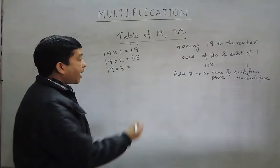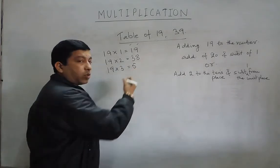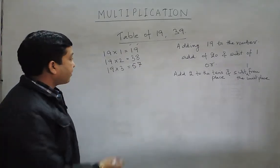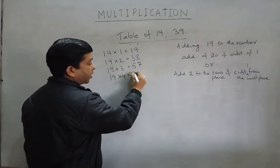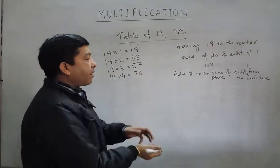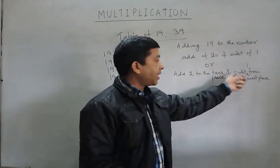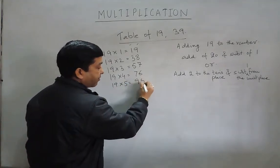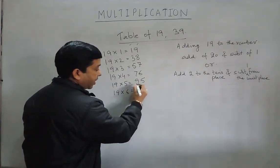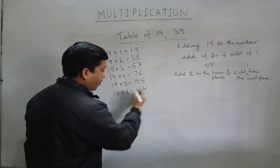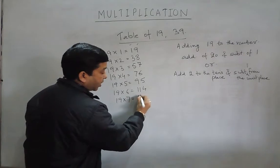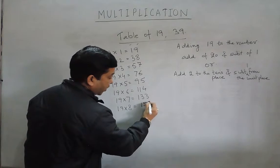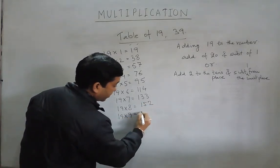How many of you can tell what 19 into 3 is? Again, we are adding 2 to the tens place — it becomes 5 — and subtracting 1 from the units place — it becomes 7. So 19 into 3 is 57. Then 19 into 4 is 76, applying the same logic: adding 2 to the tens place and subtracting 1 from the units place. Then 19 into 5 becomes 95, and 19 into 6 becomes 114 because 9 plus 2 is 11.